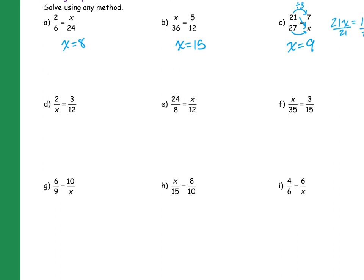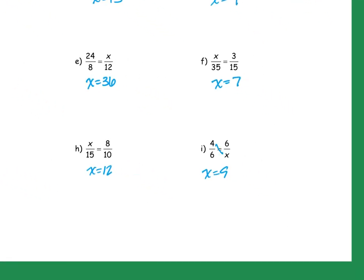D would be x equals 8. E would be x equals 36. F is x equals 7. G is x equals 15. H is x equals 12. And I, I don't know why I put an i there, I'm so sorry, x equals 9. Do you want me to do that one too? Cross multiply would be 4x equals 36. Divide by 4. X equals 9.